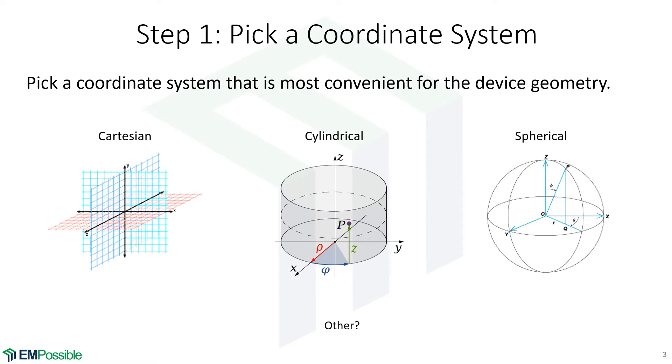Step one in this process is to pick a coordinate system. And we pick the coordinate system that is most convenient. And typically this would be the shape of the object that we're cloaking. If we're producing a cylindrical shaped cloak and cloaking a cylindrical shaped object, the cylindrical coordinate system would likely be most convenient.